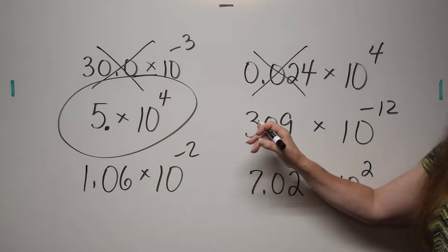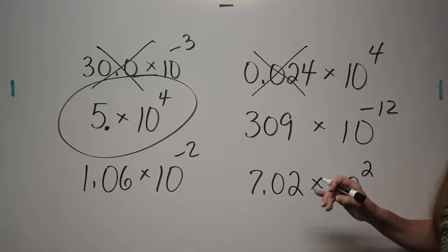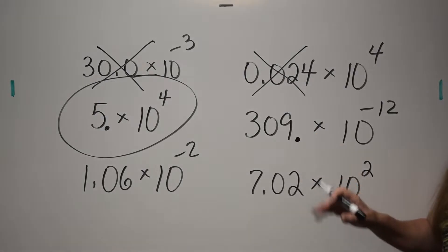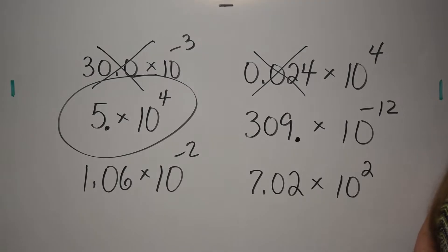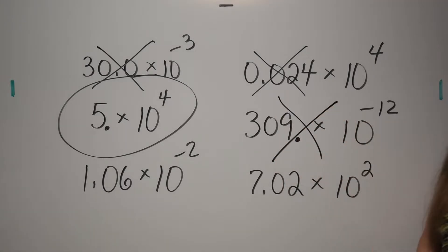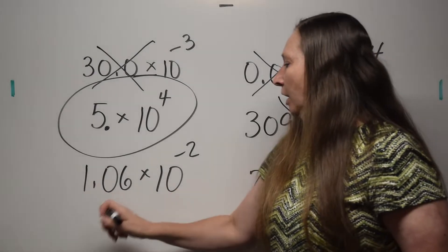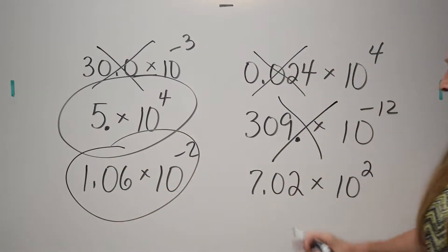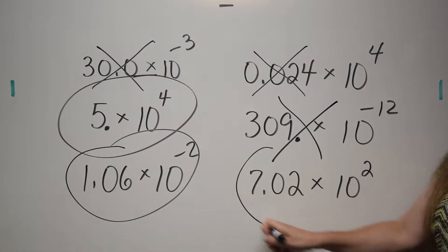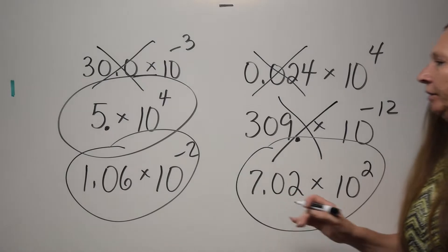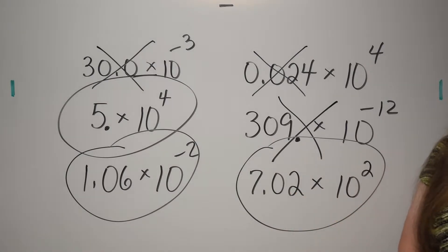Here we have the number 309, so the decimal would be understood to be here. I see three numbers in front of the decimal — that's no good. Here we have one number in front of the decimal — good. One number in front of the decimal — good. These three are in correct scientific notation.